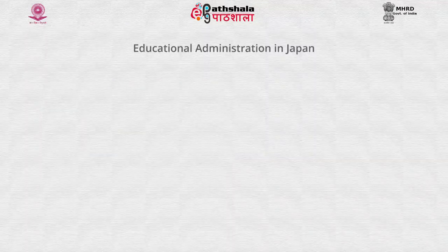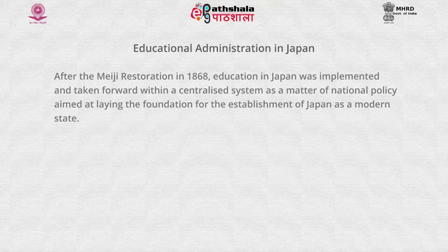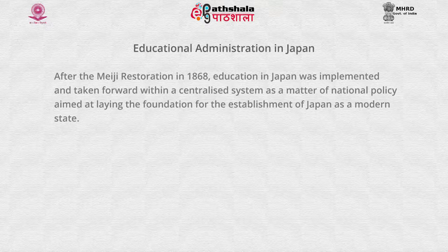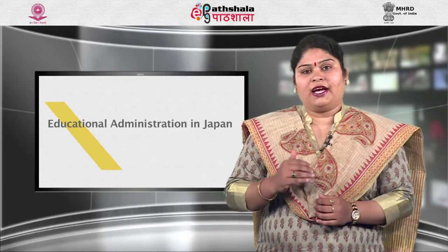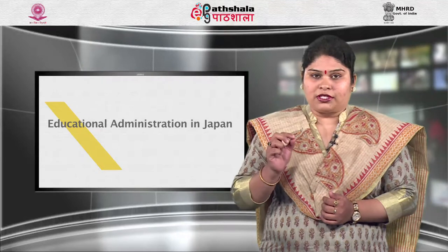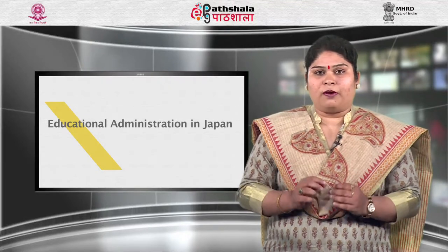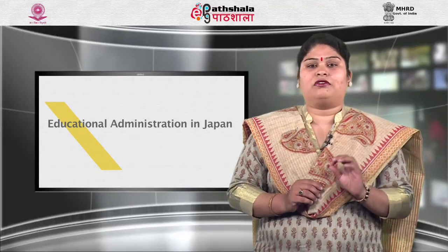We will discuss educational administration in Japan. After the Meiji Restoration in 1868, education in Japan was implemented within a centralized system as a matter of national policy aimed at laying the foundation for Japan as a modern state. However, after the end of World War II, as one element of democratic reform, a process of educational reform was carried out aimed at the democratization and decentralization of education.